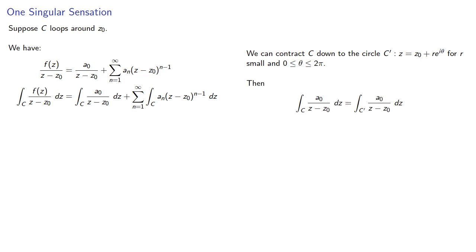And so our first integral becomes. But remember a_n is the nth derivative divided by n factorial. So a_0 is going to be f of z0.